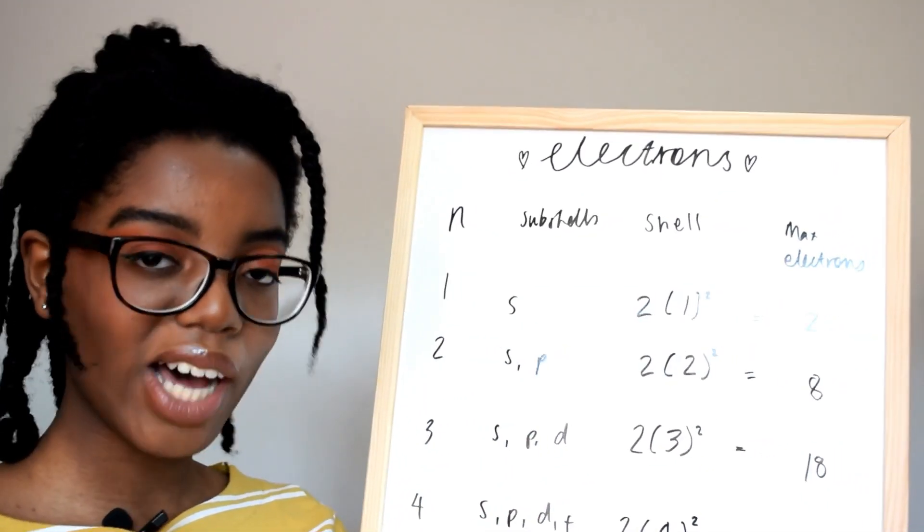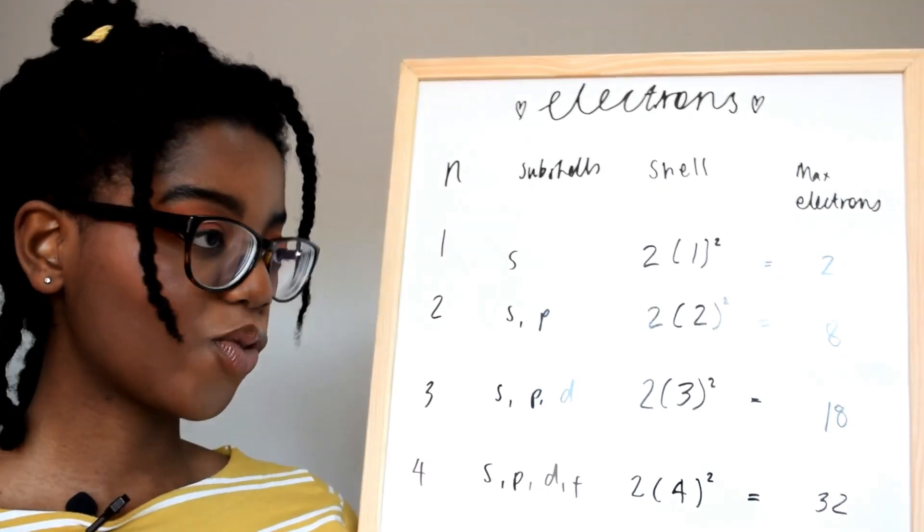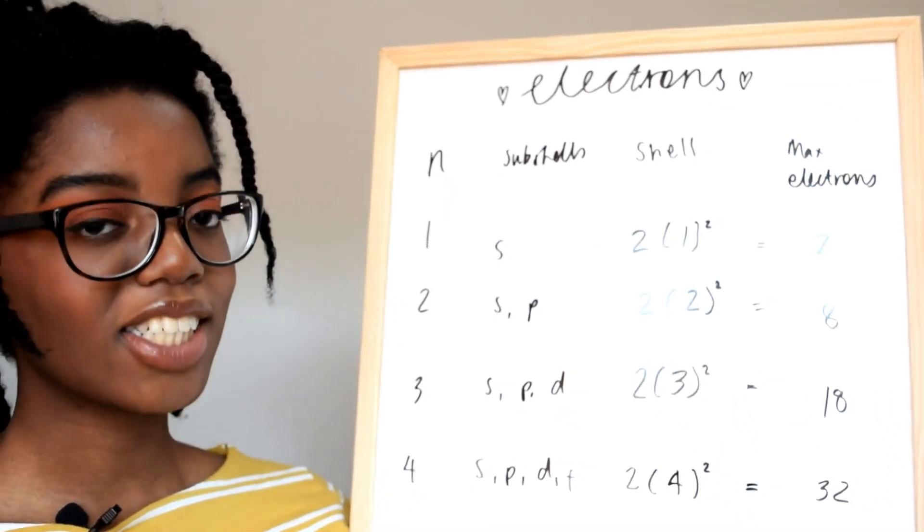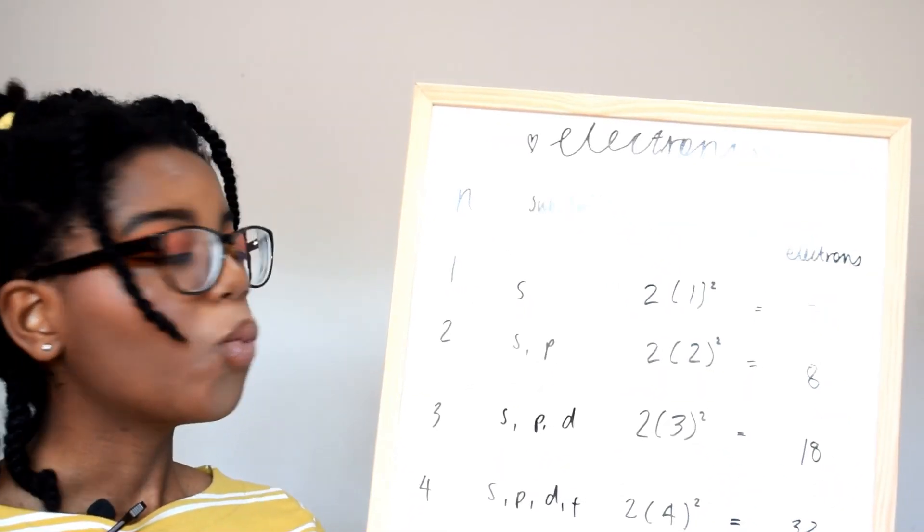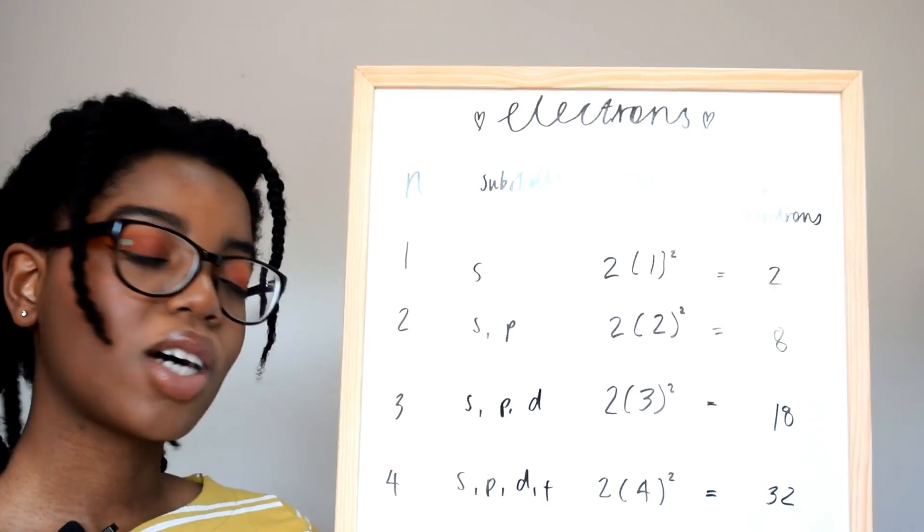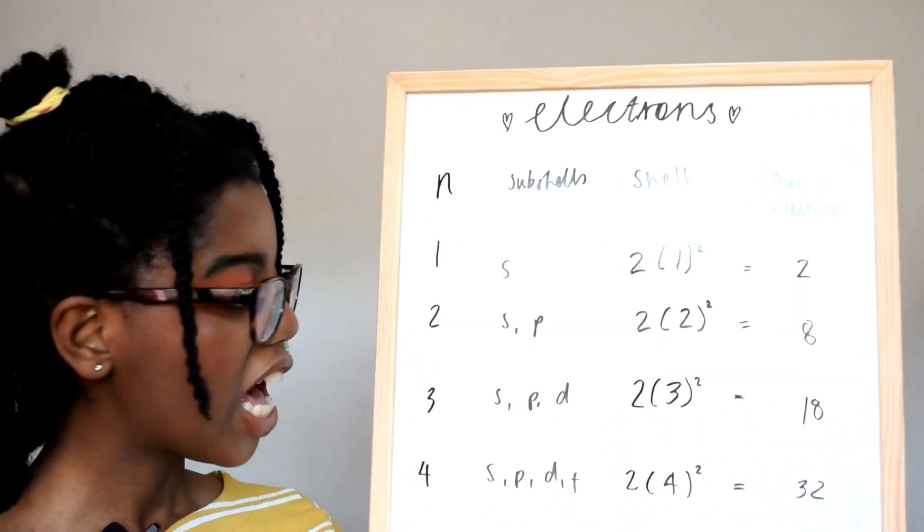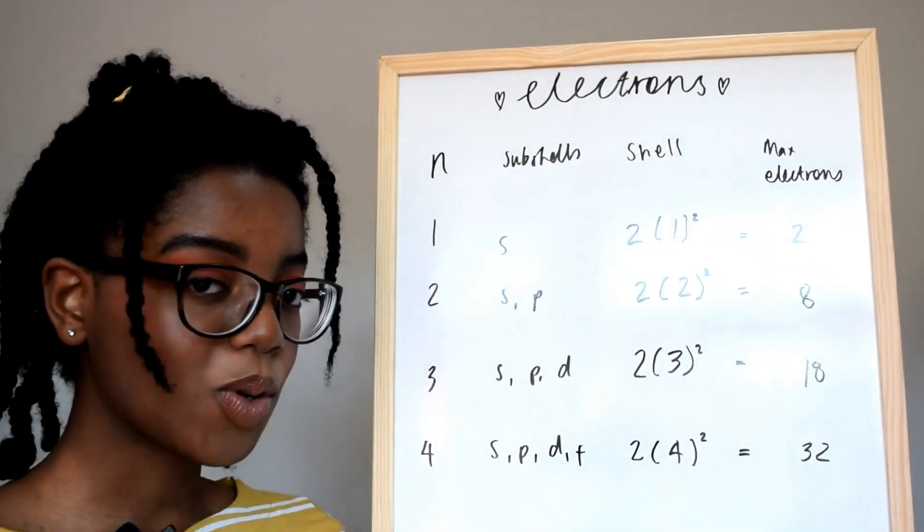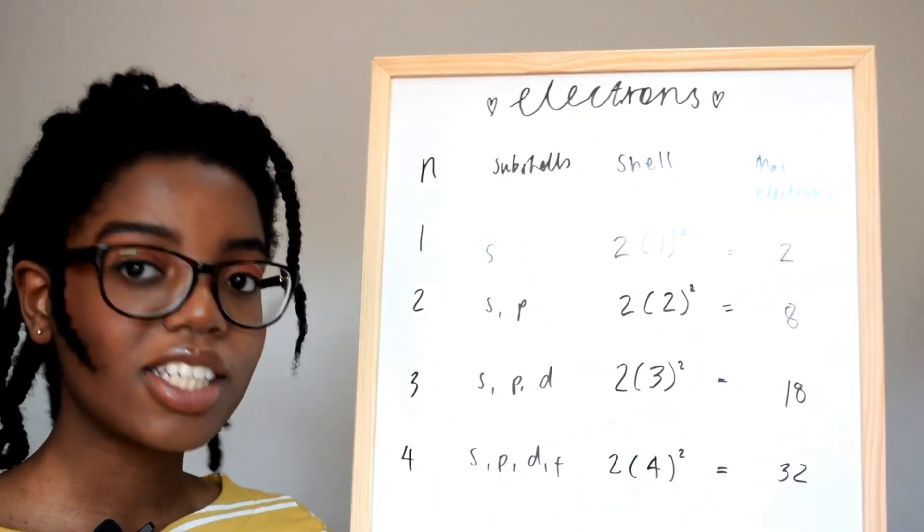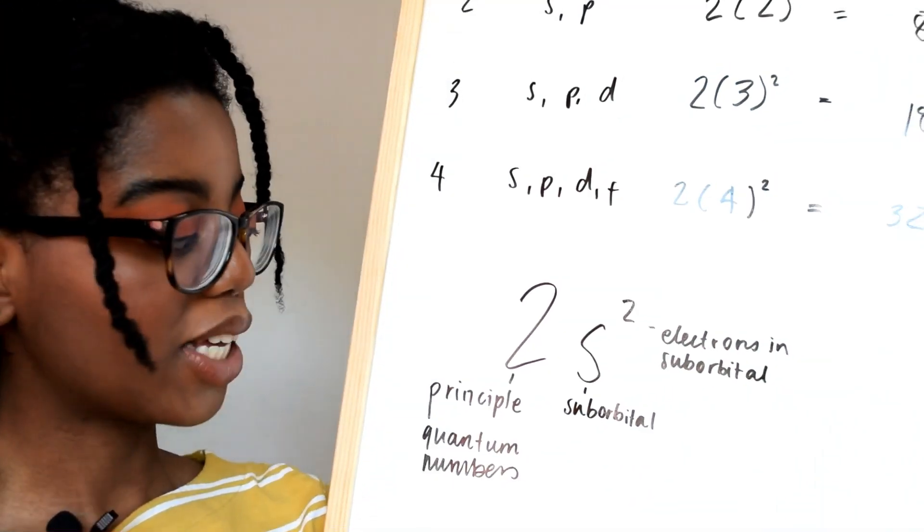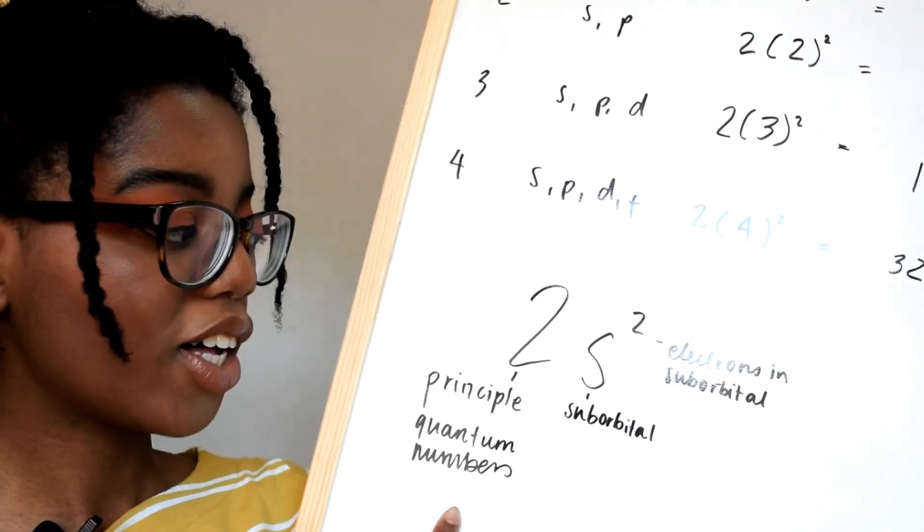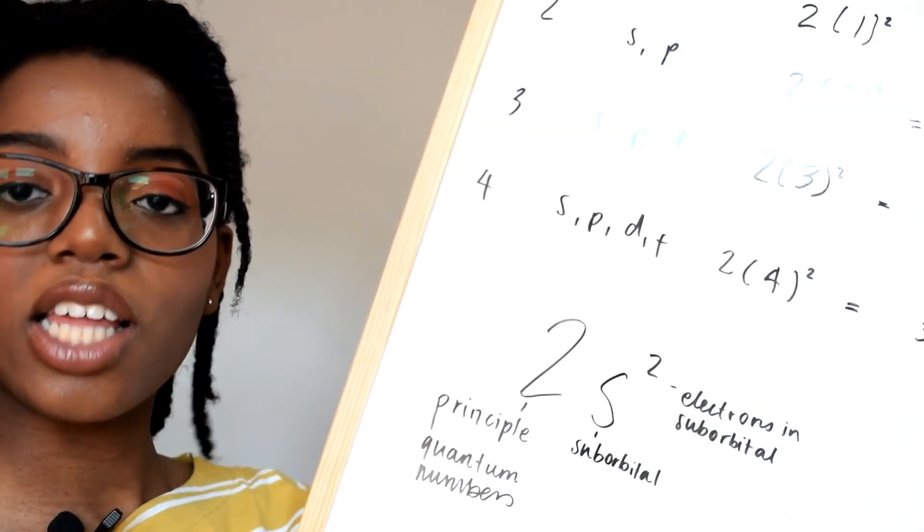With two electron subshells you'd have s and p, so that would mean you'd have a calculation of 2 times 2 squared to get eight maximum electrons. With three principal quantum shells you'd have s, p, and d, which would give you 2 times 3 squared which is 18. And with four principal quantum shells you'd have s, p, d, and f subshells and you would get 32 electrons. We write this as chemists with this notation where you have the principal quantum number, the subshell, and then the electrons in the subshell as a power.